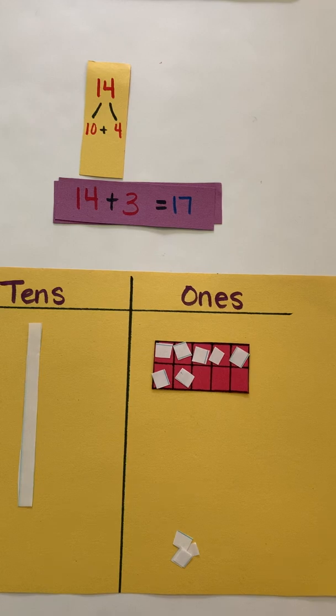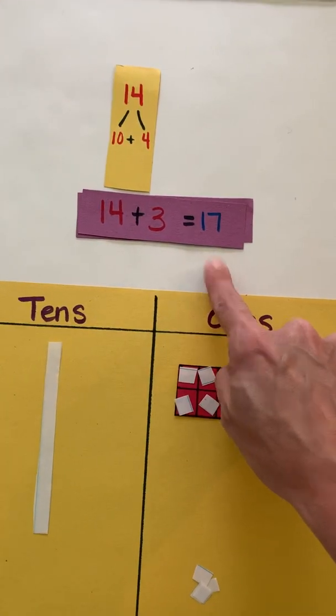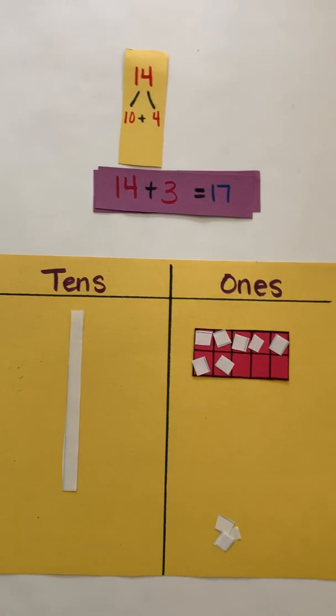So this video today focused on adding a two-digit addend plus a one-digit addend to get the sum. Now it's going to be your turn to practice some on your own.